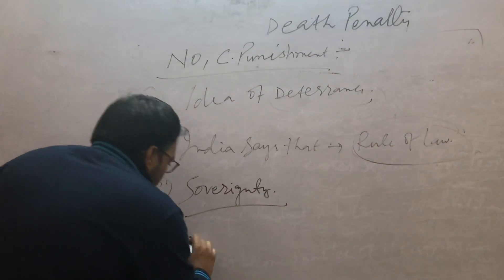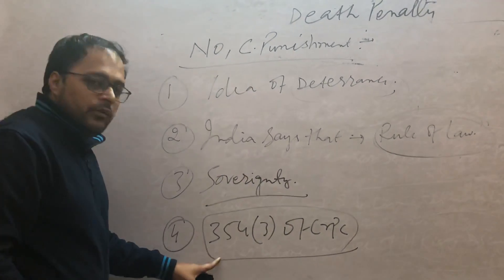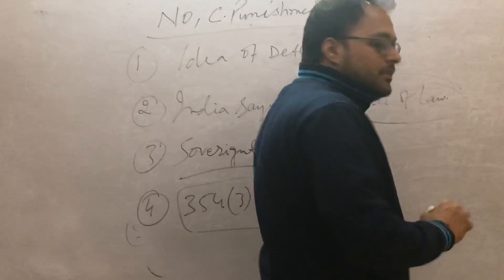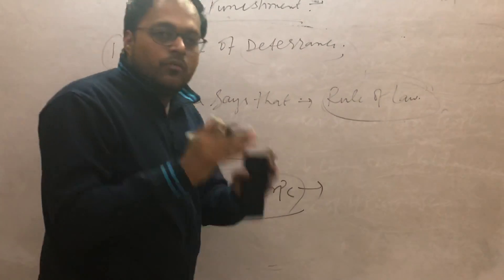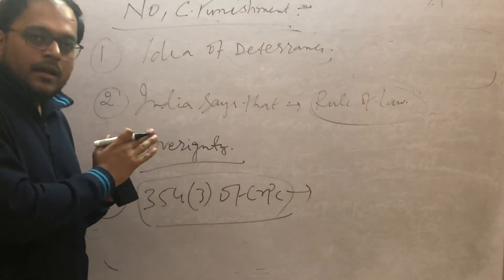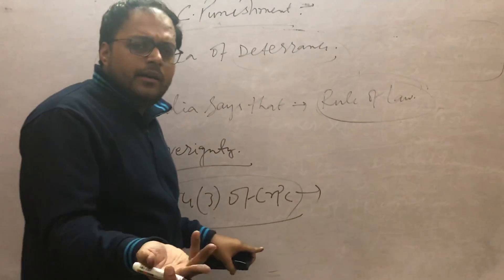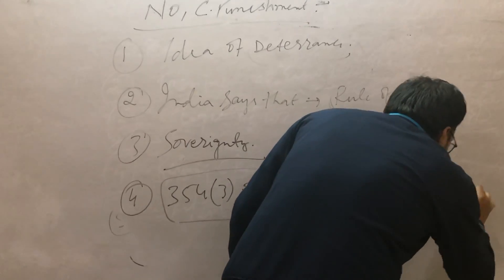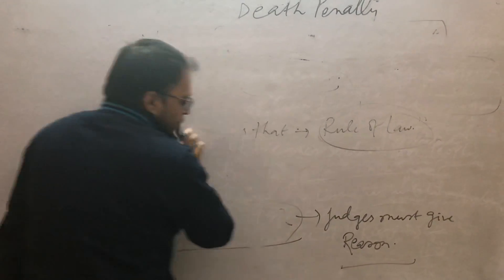Fourth, Section 354(3) of CrPC says judges must give reasons for awarding the death penalty. This is one of the safeguards available, and supporters of capital punishment argue there is already a safeguard in place. These are the arguments for retention or non-abolition of capital punishment.